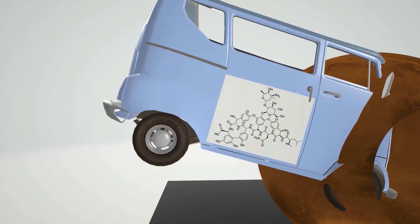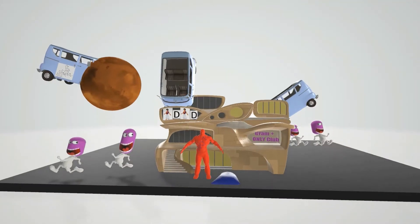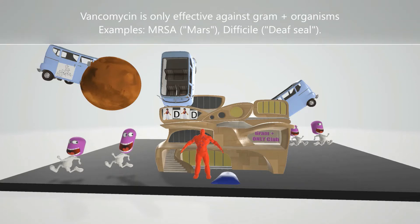You can notice the large complex structure of vancomycin. In this club we have the gram-positive bacteria — you can see they're purple, because gram-positive stains purple in gram-staining due to the thick peptidoglycan wall. All these guys are running away because they're scared by the vans. The club sign says 'gram-positive club only,' reminding us that vancomycin is only effective against gram-positive bacteria, not gram-negative.